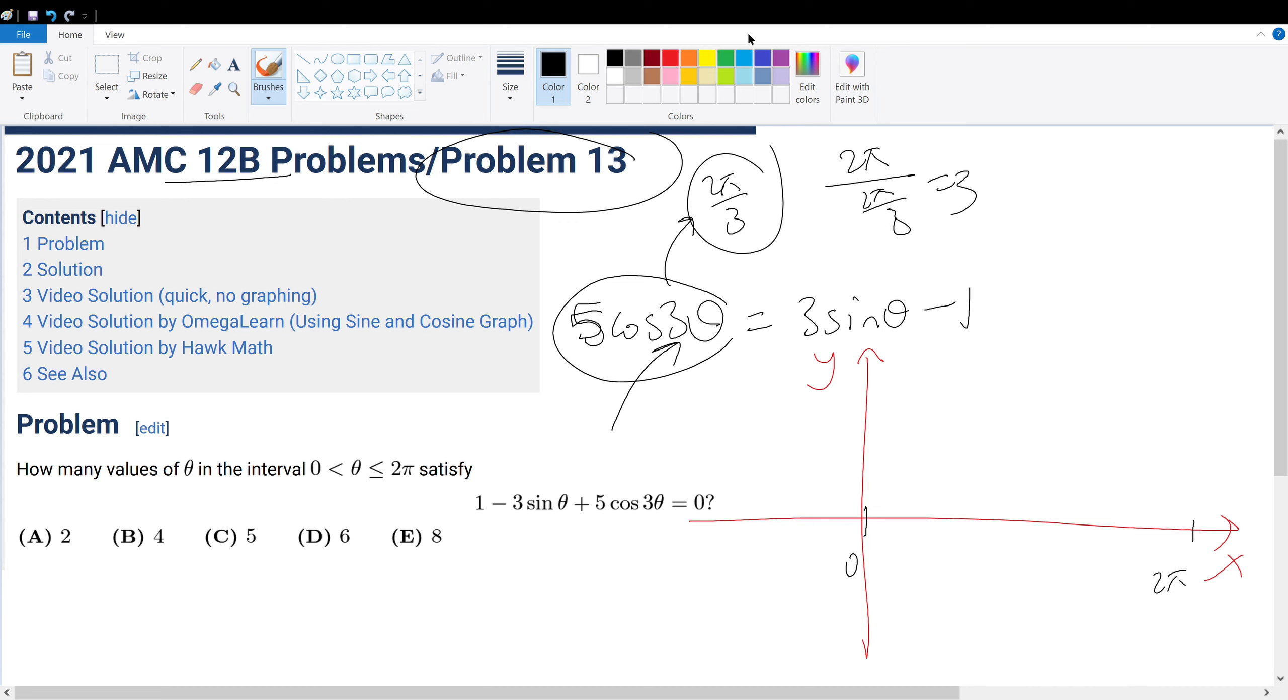And then since it's 5, its amplitude would go up to 5. So the graph will look something like... We don't have to draw super accurately, like one whole period of cosine. And then we have another one. And then we have another one. So it would go like that.